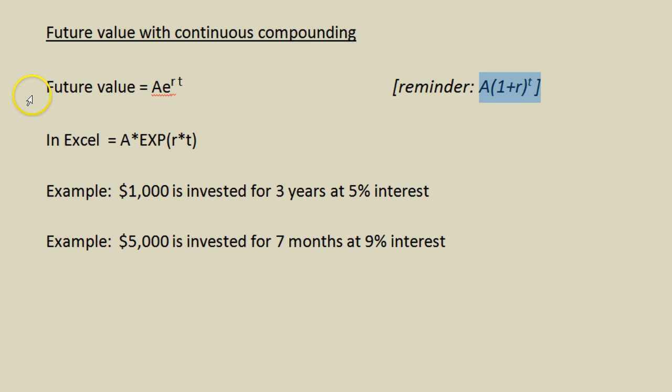So we do have a new equation for finding future value. It is Ae^(rt) where A is still the amount that you are concerned with, r is still the interest rate, t is still time, and e is a constant approximately equal to 2.718 that we're not going to worry about that value since we're going to use Excel and it has that value built in.